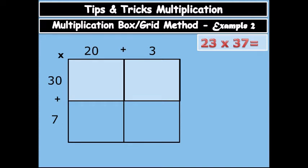So the first row you have 20 times 30, that is 600, and then 3 times 30 equals to 90. Then we have 20 times 7 is 140, and then 3 times 7 equals to 21.